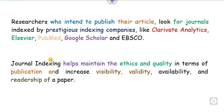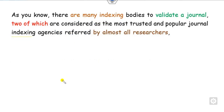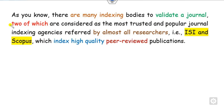Journal indexing helps maintain the ethics and quality of publications as well as publishers, which increases your visibility, validity, and readership. There are many indexing bodies that can validate your journal — some may have Google Scholar indexing, some ISI, some Scopus. But the most trustworthy and powerful journal indexing databases are only two: ISI, which is called JCR (Journal Citation Reports), and Scopus, which are highly quality peer-reviewed publications.